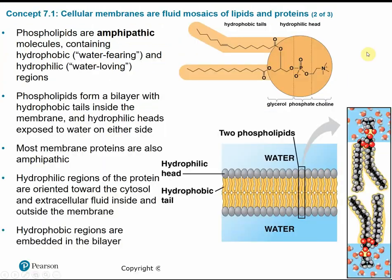Phospholipids comprise the cell membrane and are considered amphipathic, meaning they have two opposing ends — think of an amphibian that is both on land and in water. Amphipathic molecules have a hydrophobic or water-fearing region, which would be the tails, and hydrophilic or water-loving regions on the heads. The cell membrane is composed of a phospholipid bilayer — a double layer of these phospholipids with the hydrophobic tails facing inward toward one another, away from the fluid inside and outside of the cell.